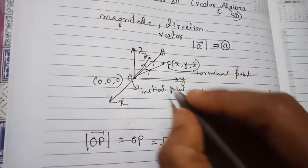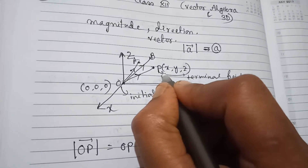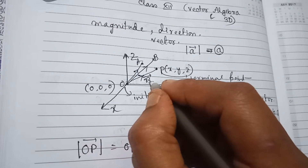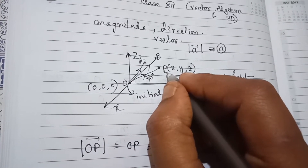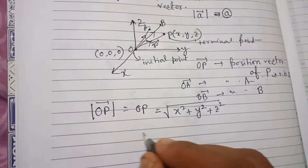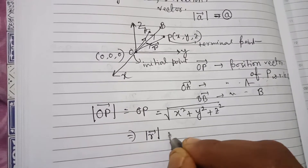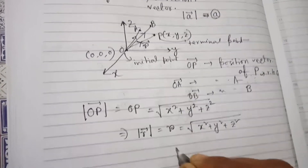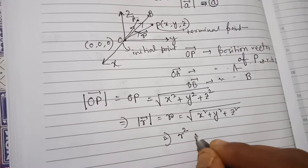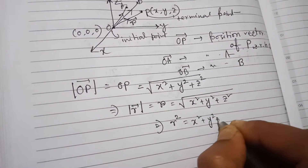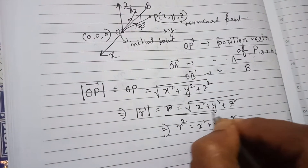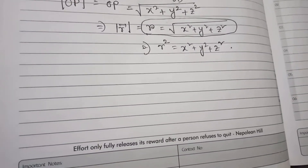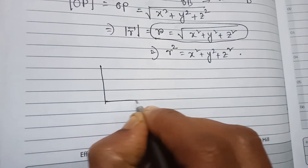If P is a general point in the space, then the OP vector is generally denoted as r vector. So r vector is the position vector of the general point P(x, y, z). From this we can write: modulus of r vector, or simply r, equals √(x² + y² + z²). Squaring both sides gives r² = x² + y² + z².